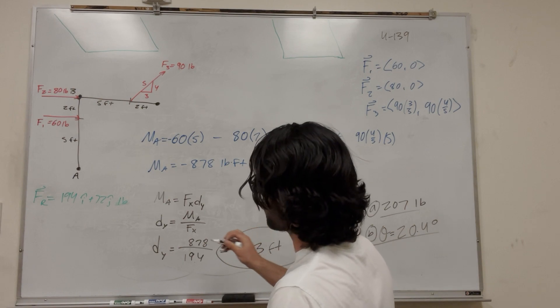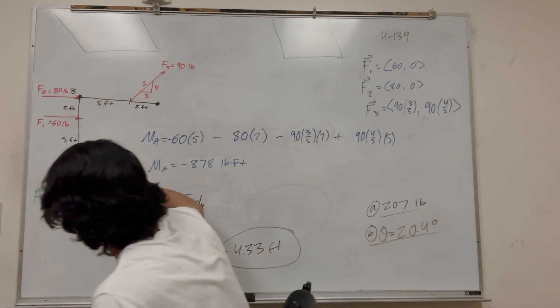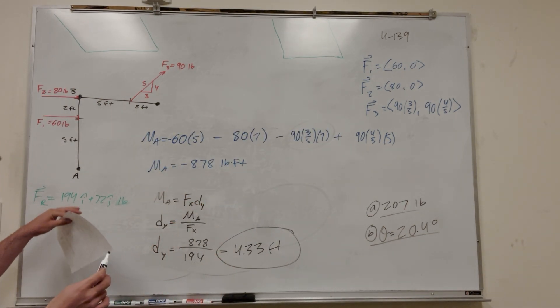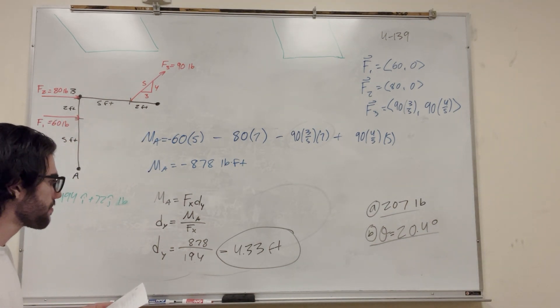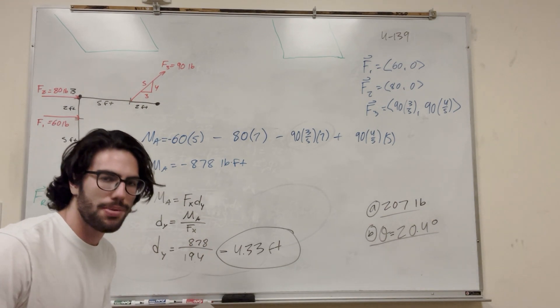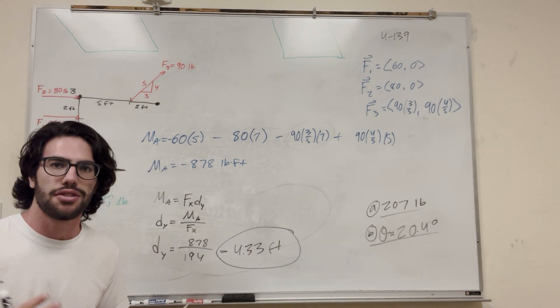Which is our answer. That means if we place something 4.33 feet up with this resultant force, that's going to have the exact same effect of these three forces acting. So that's how you simplify this system. If you need any more help with these problems, I have a lot more on my channel. So feel free to check those out. And I'll see you in the next one, guys. Peace.